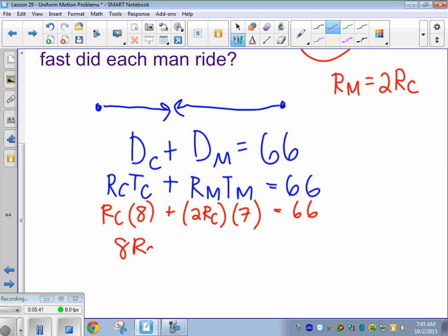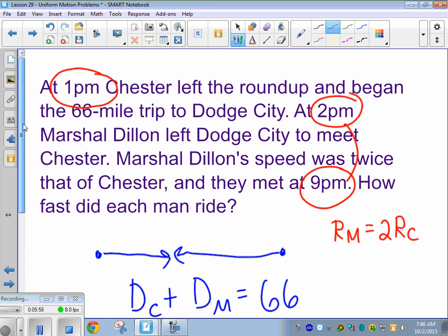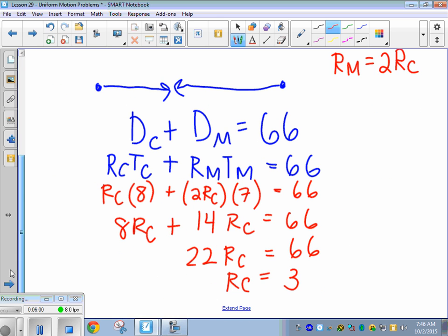And let's solve it. So I have 8R_C. And 14R_C. Add those up and we get 22R_C. And divide by 22. And our rate is 3. That's slow. 3 what? Miles per hour.